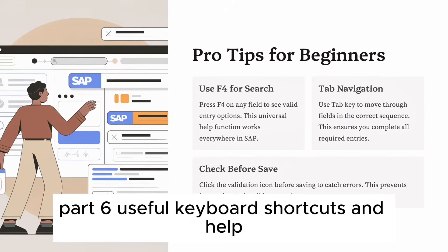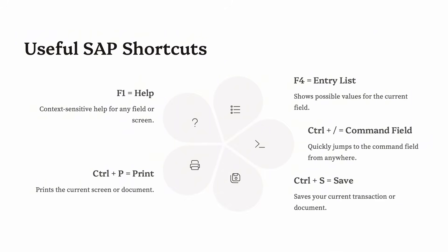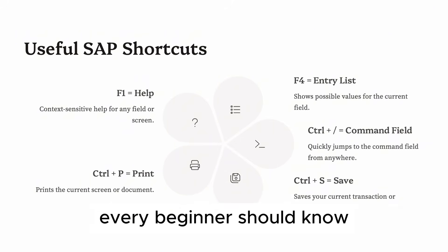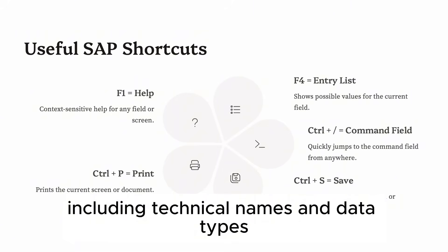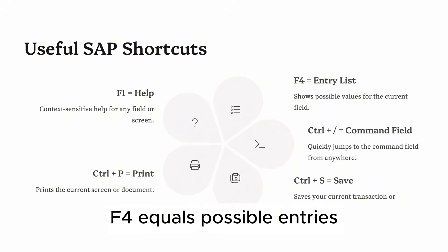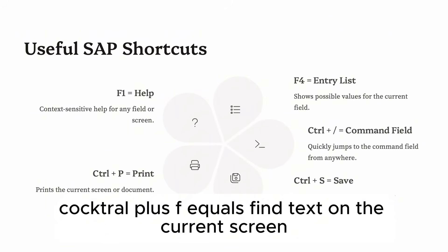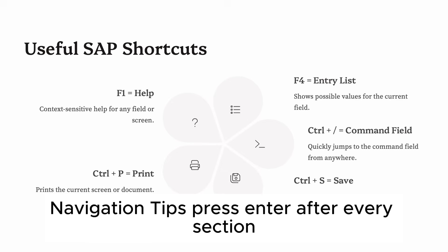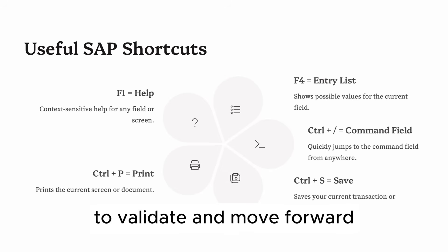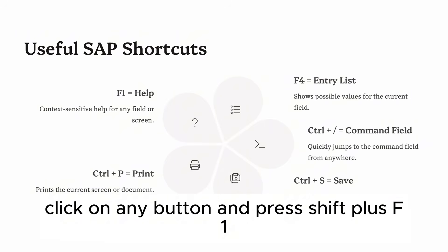Part 6: Useful keyboard shortcuts and help. Once you're more familiar with SAP navigation, using keyboard shortcuts can make your work much faster and smoother. Here are the most useful ones every beginner should know. F1 — field help: shows you a detailed explanation of the field, including technical names and data types. F4 — possible entries: opens a drop-down or search window where you can select valid entries for a field. Ctrl + F — find text on the current screen. Ctrl + slash — show or hide the command field. Ctrl + S — save your current data. Ctrl + P — print screen or document. Press Enter after every section to validate and move forward. Use the Tab key to quickly jump between fields. Click on any button and press Shift + F1 to get additional information on that element.